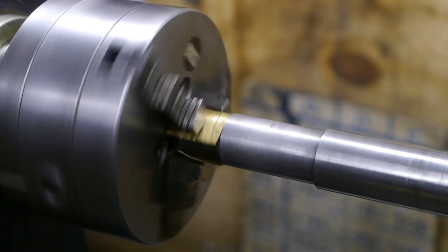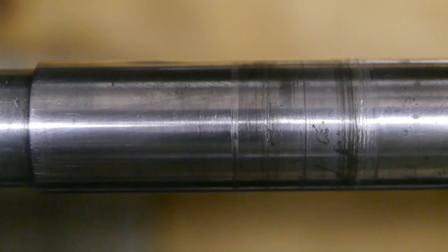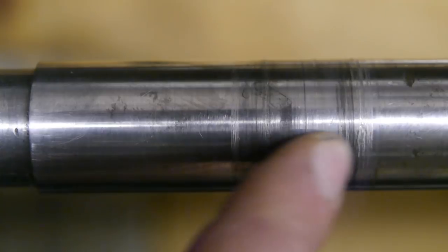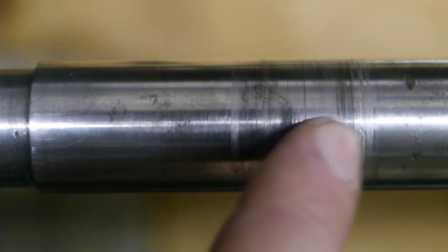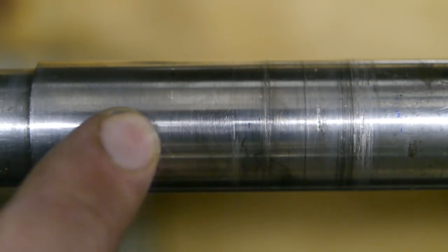Before I start polishing let's have a quick look at the current state of the journals. Here's a look at the rear journal. This whole part here is the journal. Normally the spindle would ride over here but when threading it will move up to here.